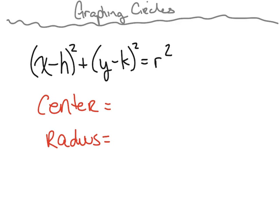In this video we'll be looking at graphing circles, and the equation that we'll be using to graph those circles is x minus h squared plus y minus k squared is equal to r squared.